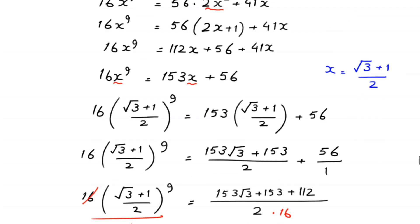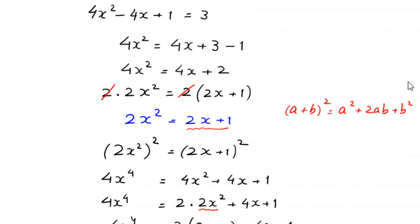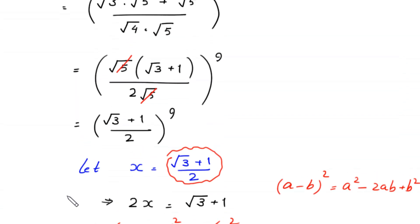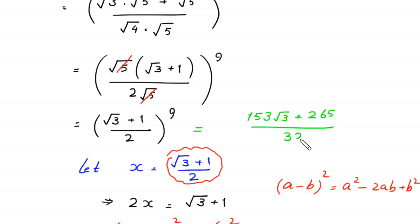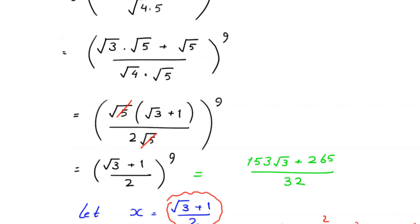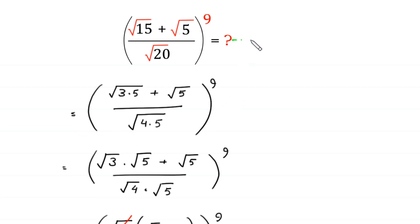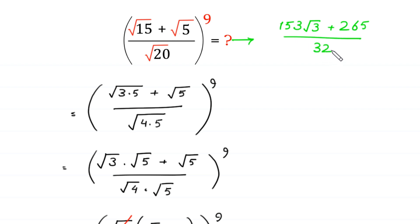So this expression square root of 3 plus 1 over 2, whole to the power 9, equals 153 times square root of 3 plus 265 divided by 32. This is the final value of the original expression.